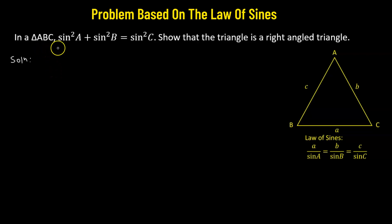We need to prove that in triangle ABC with the condition sine squared A plus sine squared B equals sine squared C, we have to show that the triangle is a right-angled triangle. So let us begin.